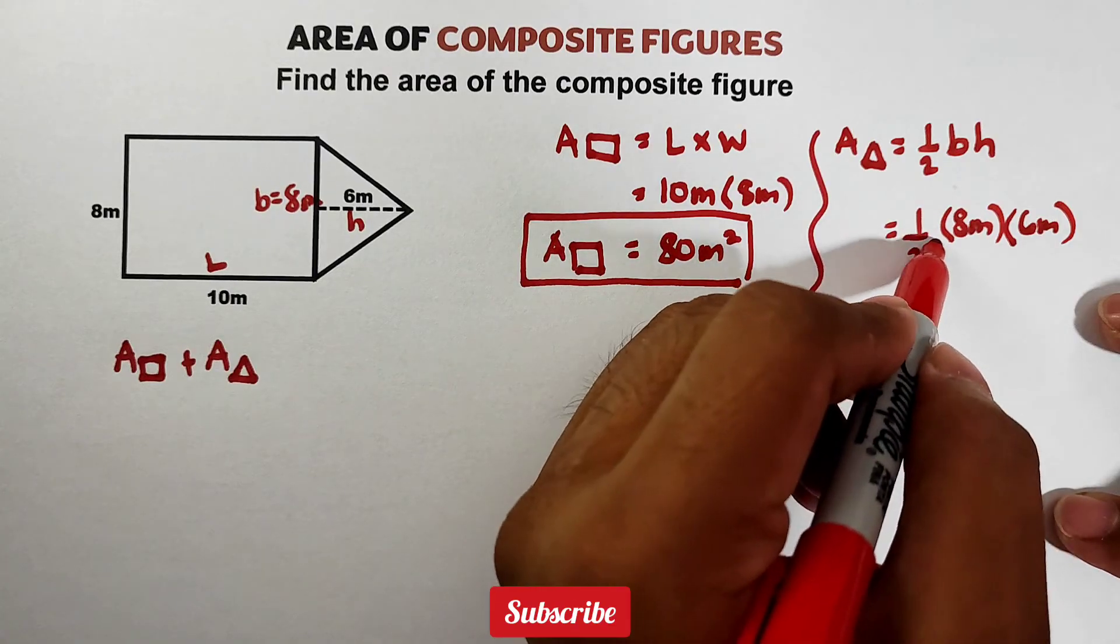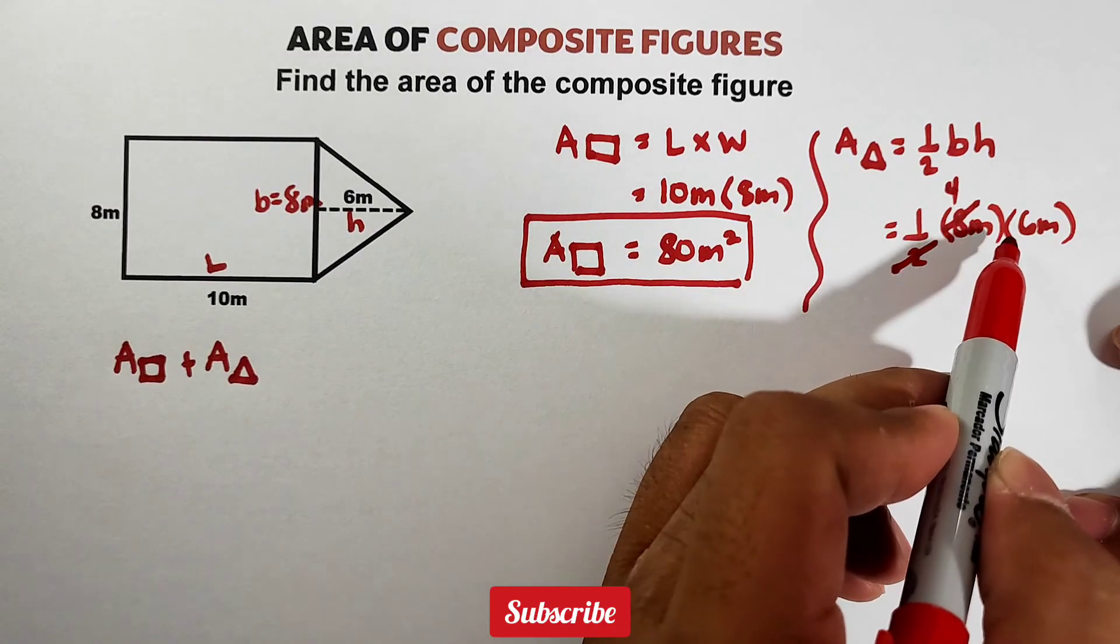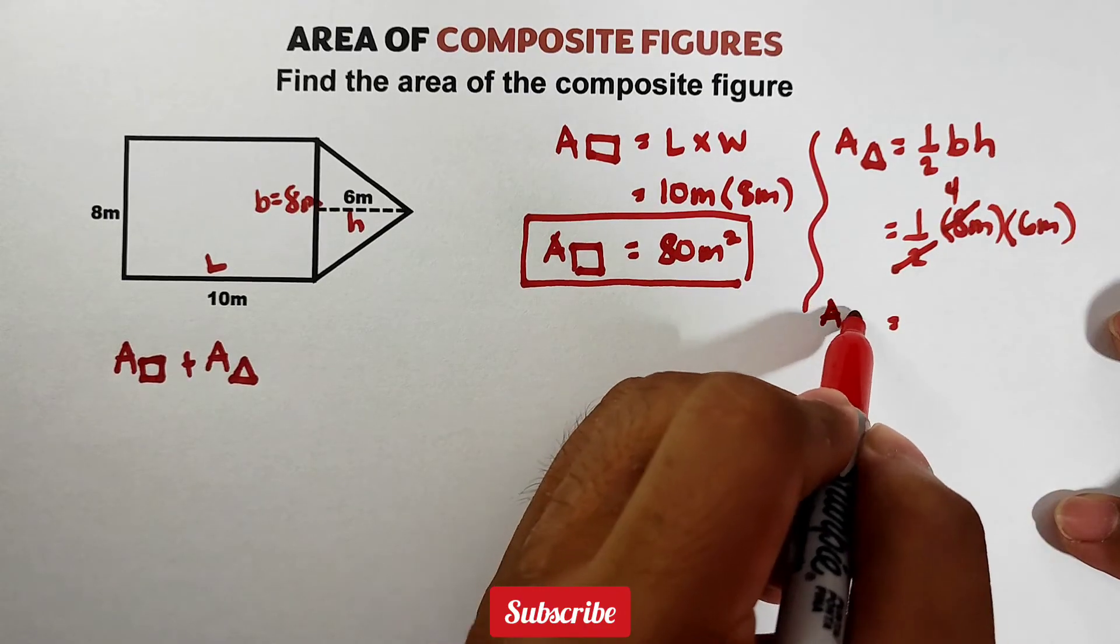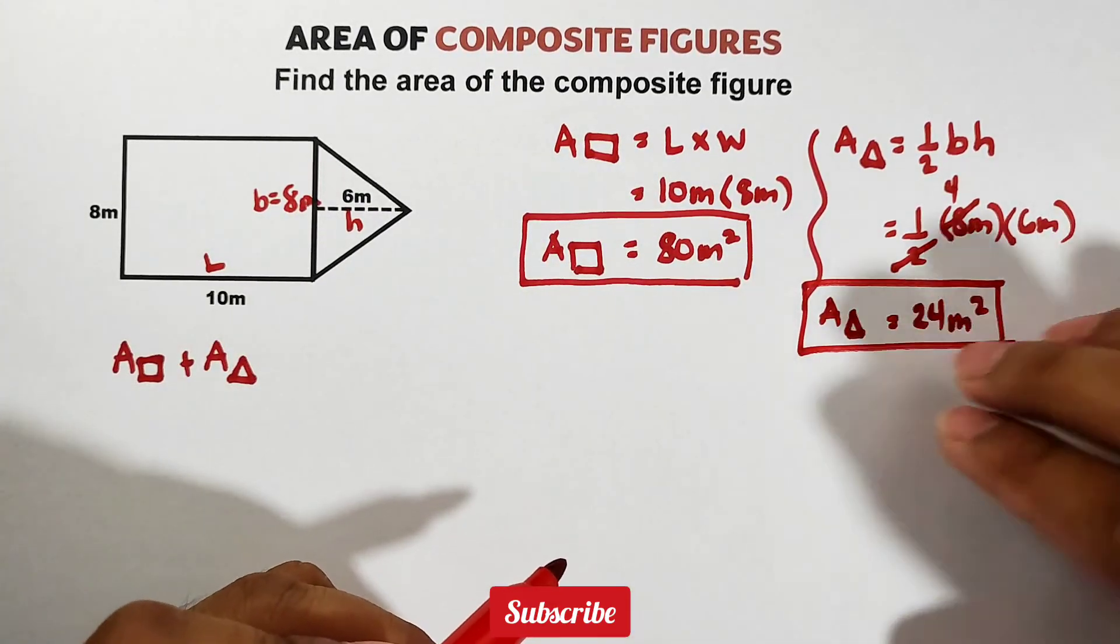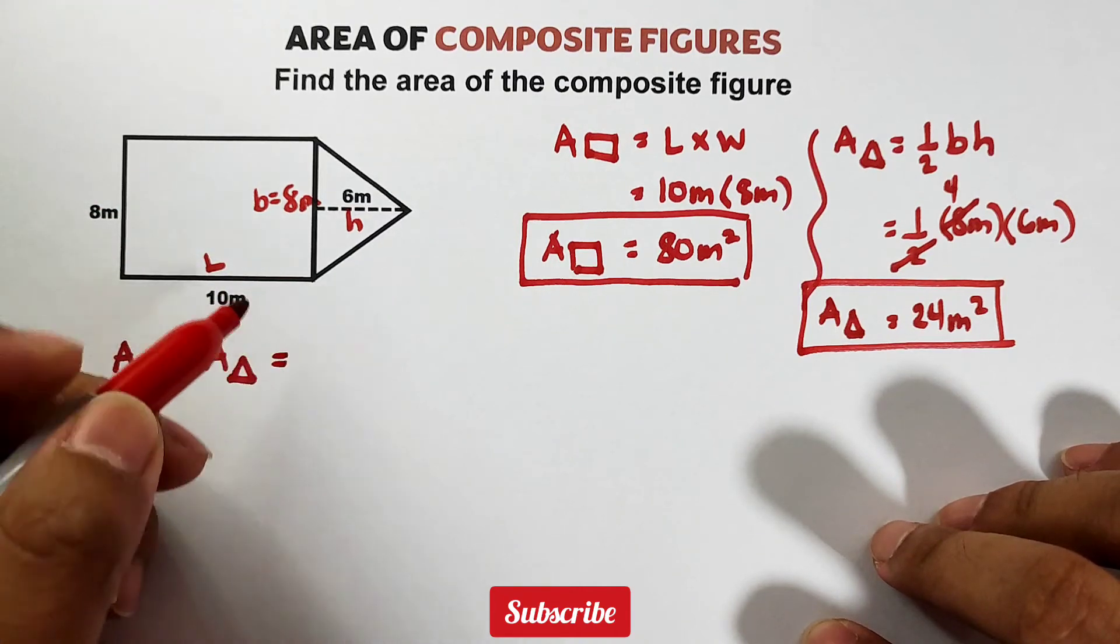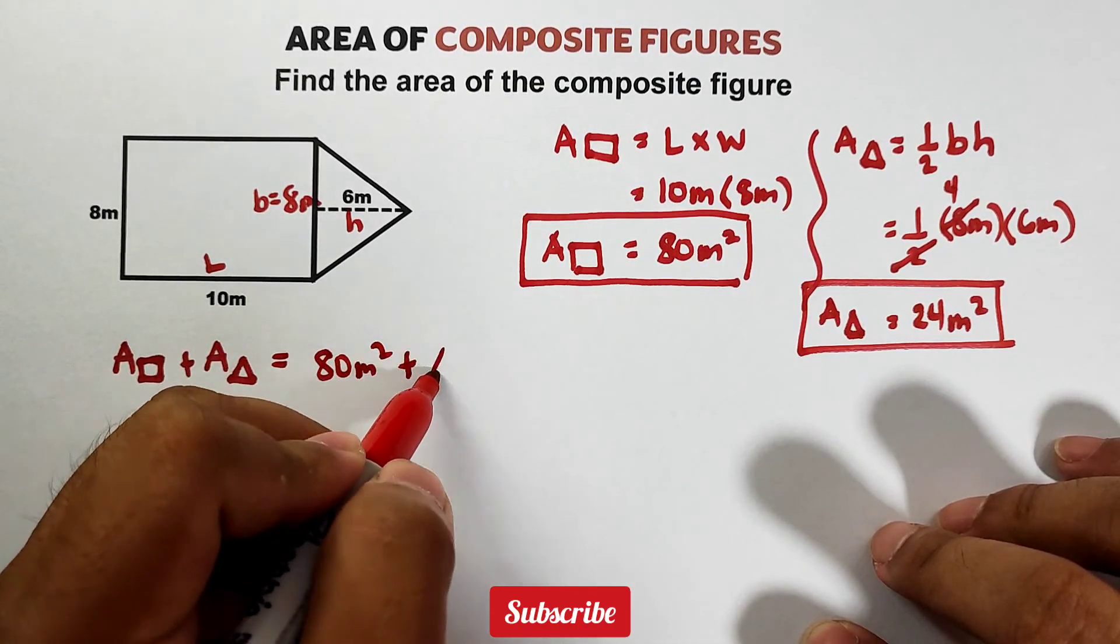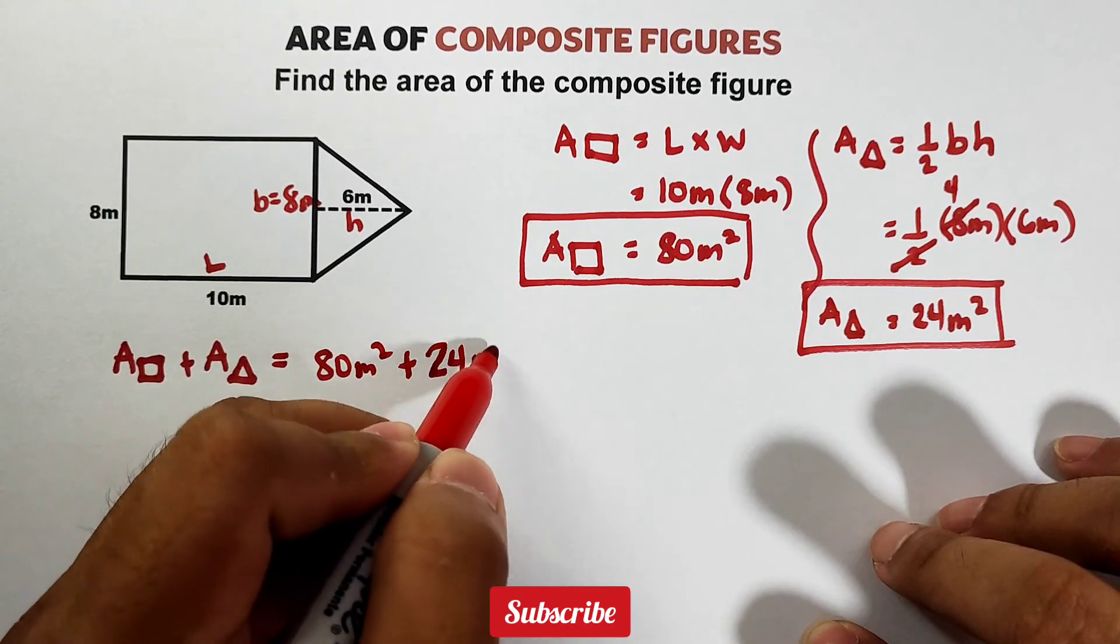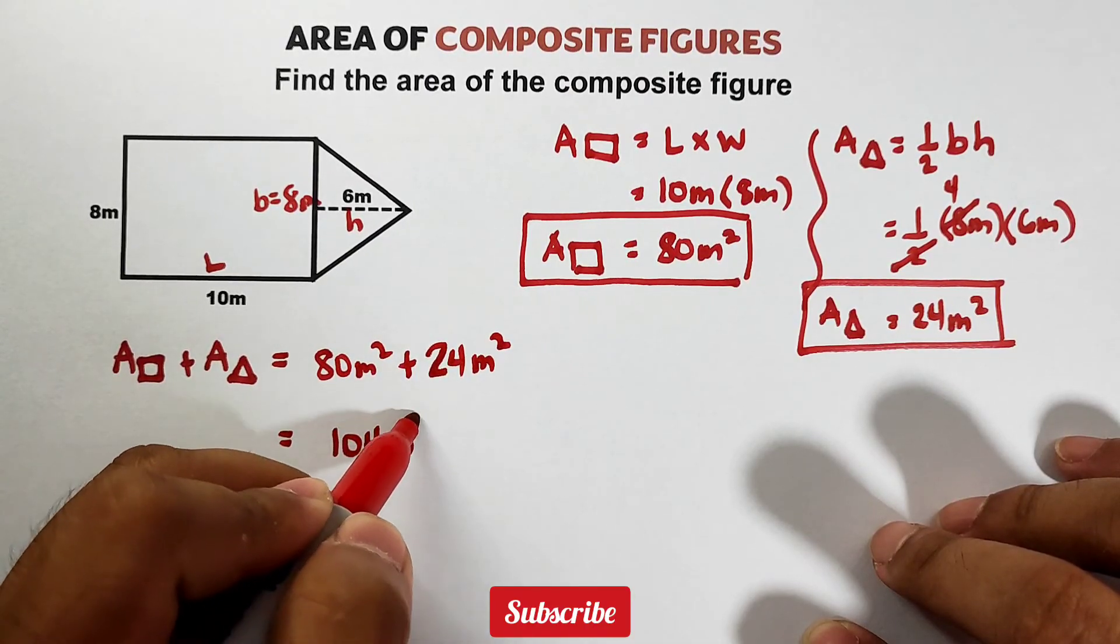The 2 and 8, cancel out. This becomes 4. So what we need to do is to multiply 1 times 4, which is 4, times 6 meters. This will give us the answer of 24 meter squared. This is our answer. So to get the area of this composite figure, add them. We have the 80 meters squared for the rectangle, plus the area of the triangle, which is 24 meters squared. And this will give us the answer of 104 meters squared.